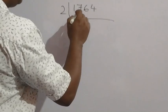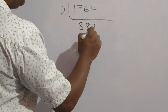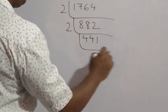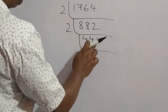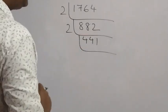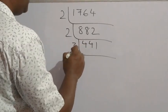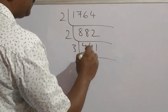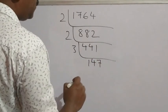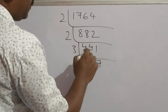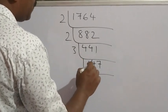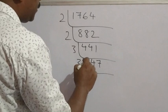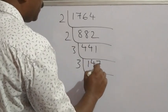Dividing 1764 by 2 repeatedly: 2 × 882, then again divisible by 2. Now check the digit sum: 4 + 4 = 8, plus 1 is 9. So 9 is divisible by 3, meaning the whole number is divisible by 3. Divide by 3: 3 × 1 = 3, 3 × 4 = 12, 3 × 7 = 21. Again check: 4 + 1 = 5, 5 + 7 = 12, divisible by 3, so again divisible by 3.